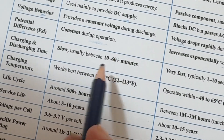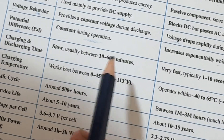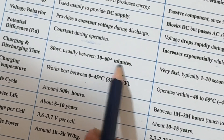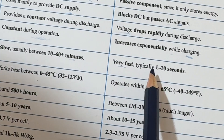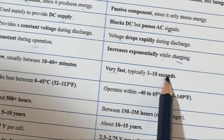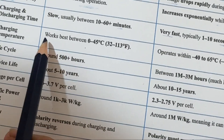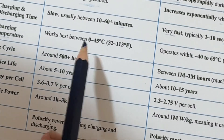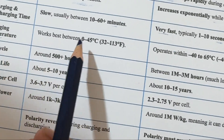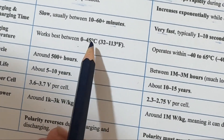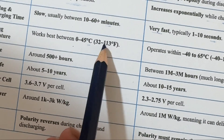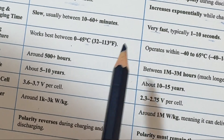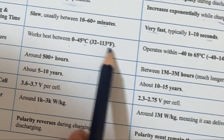Charging and discharging time: batteries are slow, usually between 10 to 60 minutes, while capacitors are very fast, typically 1 to 10 seconds. Charging temperature: batteries work best between 0°C to 45°C (32°F to 113°F).